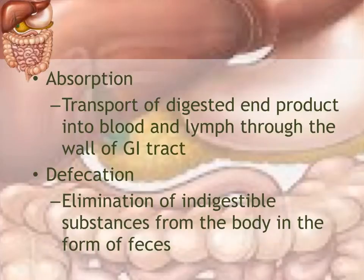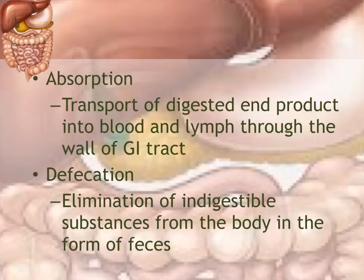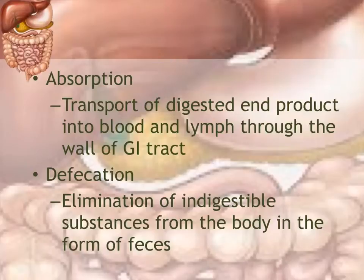Absorption, specifically for the digestive system, involves the absorption of nutrients. Once food is broken down small enough to pass through the wall of the intestine — especially the small intestine — it moves from the intestine into the blood or lymph, which carries the nutrients to the cells where they're needed. Defecation is the elimination of all materials that cannot be digested; they are collected and eliminated from the body as feces.